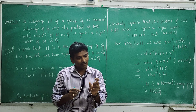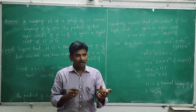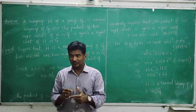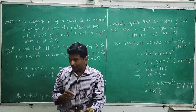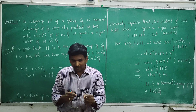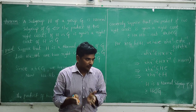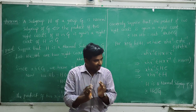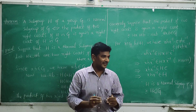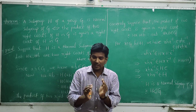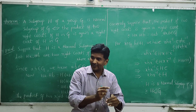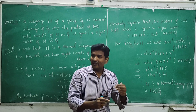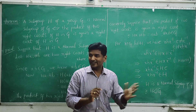Suppose Ha and Hb are two right cosets. We can multiply them — the product needs multiplication of these two right cosets. Ha into Hb is again a right coset.